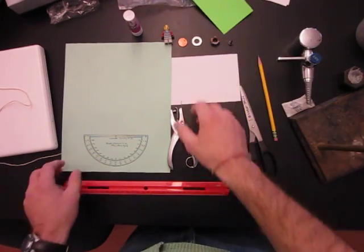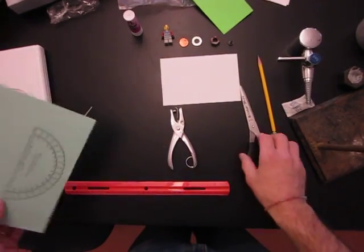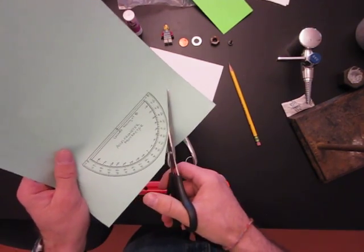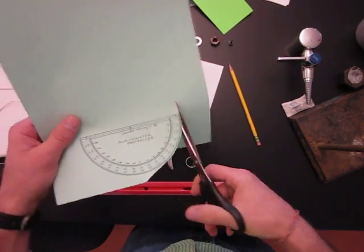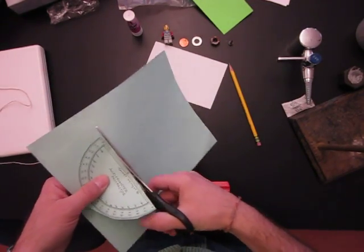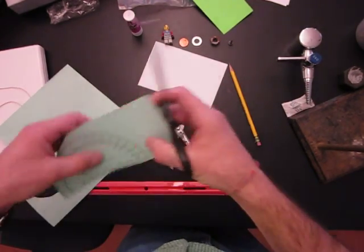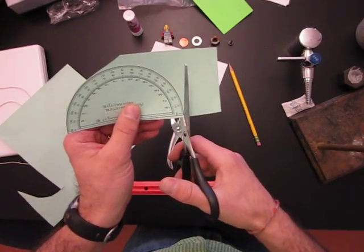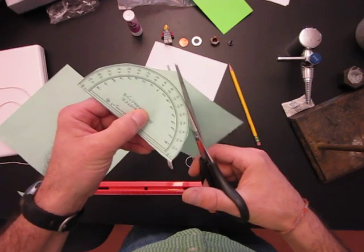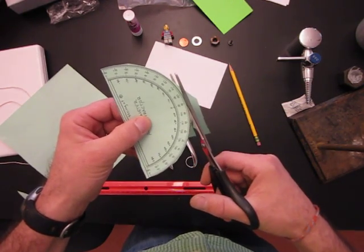So, here's what you need to do. First step is to cut out the protractor. It doesn't have to be perfectly on the lines, but it's easier if it's roughly the right shape.